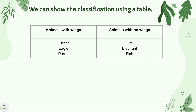We can show the classification using a table. Animals with wings, animals with no wings. Ostrich, eagle, and parrot with wings in one group. Cat, elephant, and fish with no wings in another group.